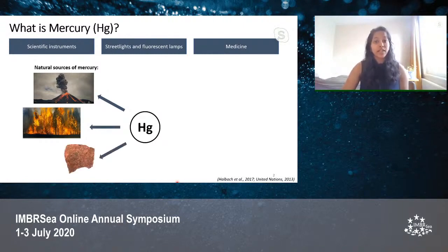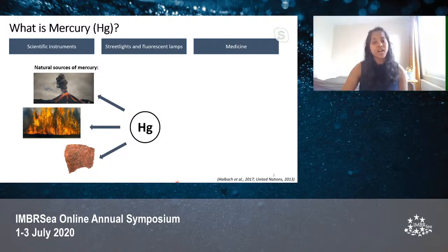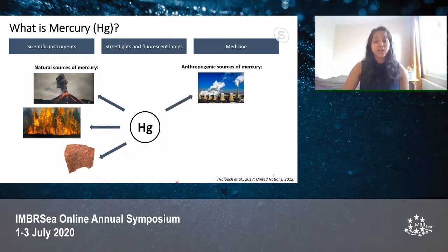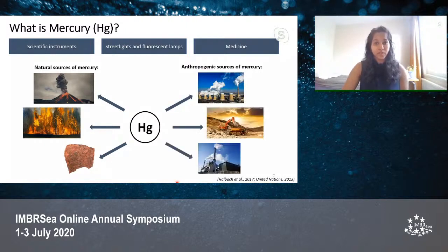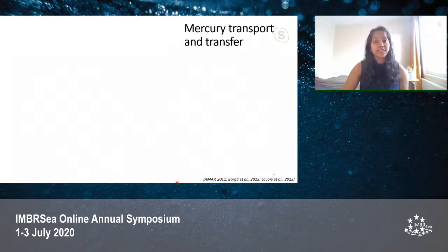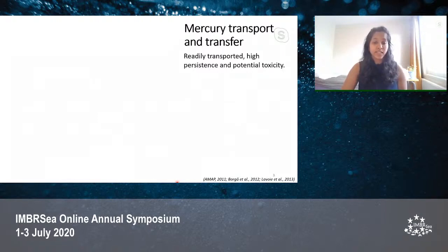However, humans have altered the natural biogeochemical cycling of mercury with their many anthropogenic activities, some of which include the use of power plants, mining, and waste incineration plants. Further, mercury is now recognized as a chemical of global concern, especially because of its long-range transport, high persistence, and potential toxicity.